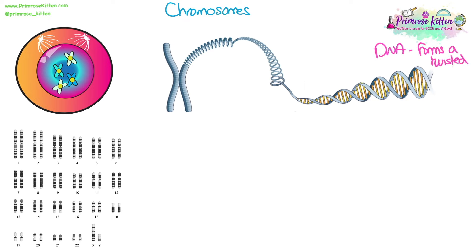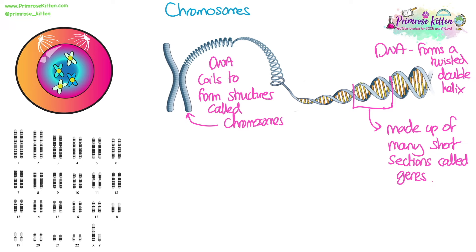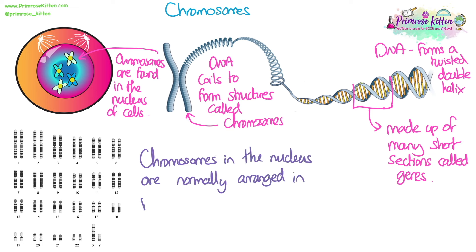Chromosomes. DNA is a long molecule that forms a twisted double helix. Sections of DNA are called genes. DNA is a really long molecule so it has to coil up repeatedly to form solid structures called chromosomes that fit inside the nucleus. Inside the nucleus, chromosomes are normally arranged in pairs — in humans there are 23 pairs of chromosomes in the nucleus of every cell in the body.